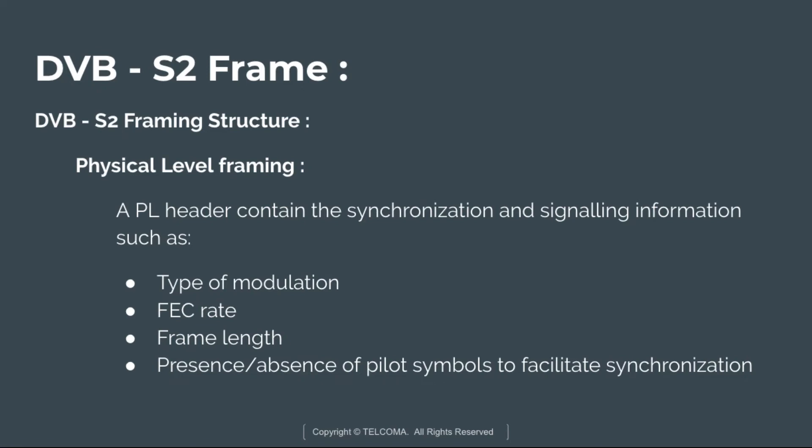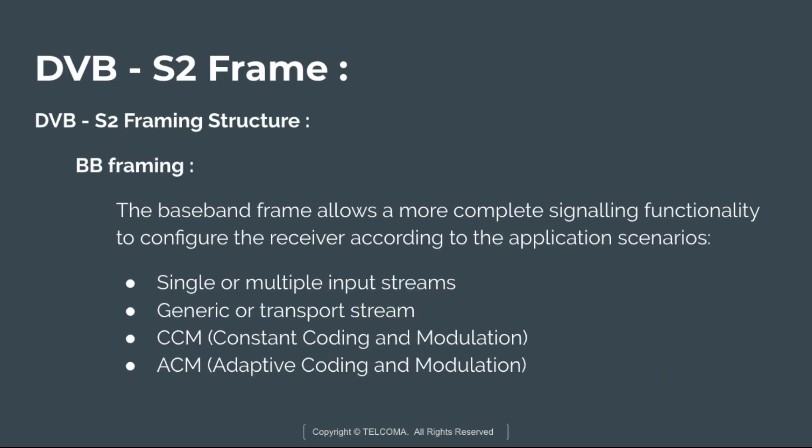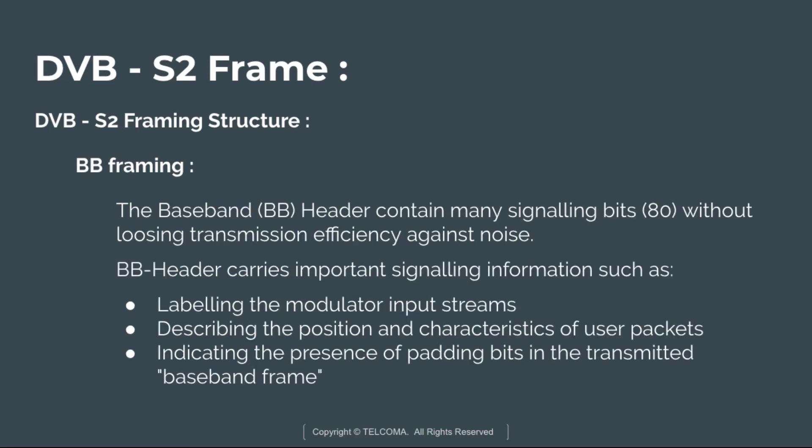The PL header contains synchronization and signaling information such as the type of modulation, FEC rate, frame length, and presence or absence of pilot symbols to facilitate synchronization. Next is BB framing. The baseband frame allows more complete signaling functionality to configure the receiver according to the application scenario. It may contain information such as single or multiple input streams, generic or transport stream, CCM (constant coding and modulation), and ACM (adaptive coding and modulation).